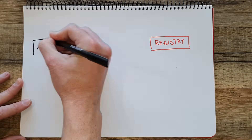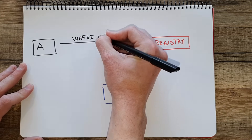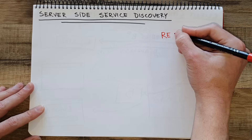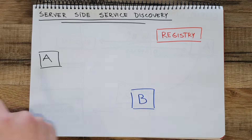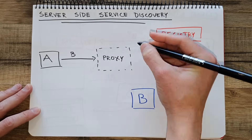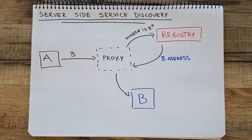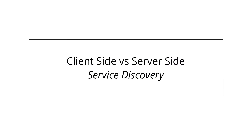This is basically client-side service discovery. In a more generic way, when service A wants to talk to service B, it needs to ask the service registry where service B is located. When it gets that information, it will call service B directly by itself. On the client-side service discovery, the main benefit is that it's simpler to implement — you don't need to set up a proxy or any type of infrastructure. You just need a registry and your service querying that registry to get the address where B is located.